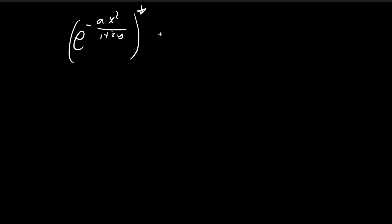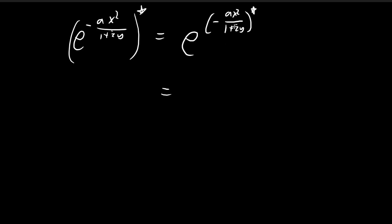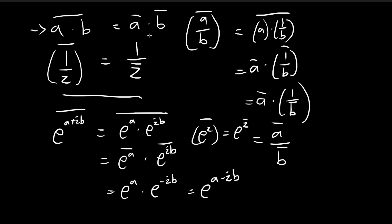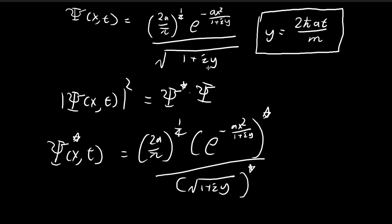Using this rule, the conjugate of the exponential term is just e to the power of the conjugate of the exponent. Since the conjugate of 1/z equals 1 over the conjugate of z, and our z is (1+iy), we get e to the power of negative ax² over (1−iy). So the conjugate of the e term is e^(−ax² / (1−iy)).